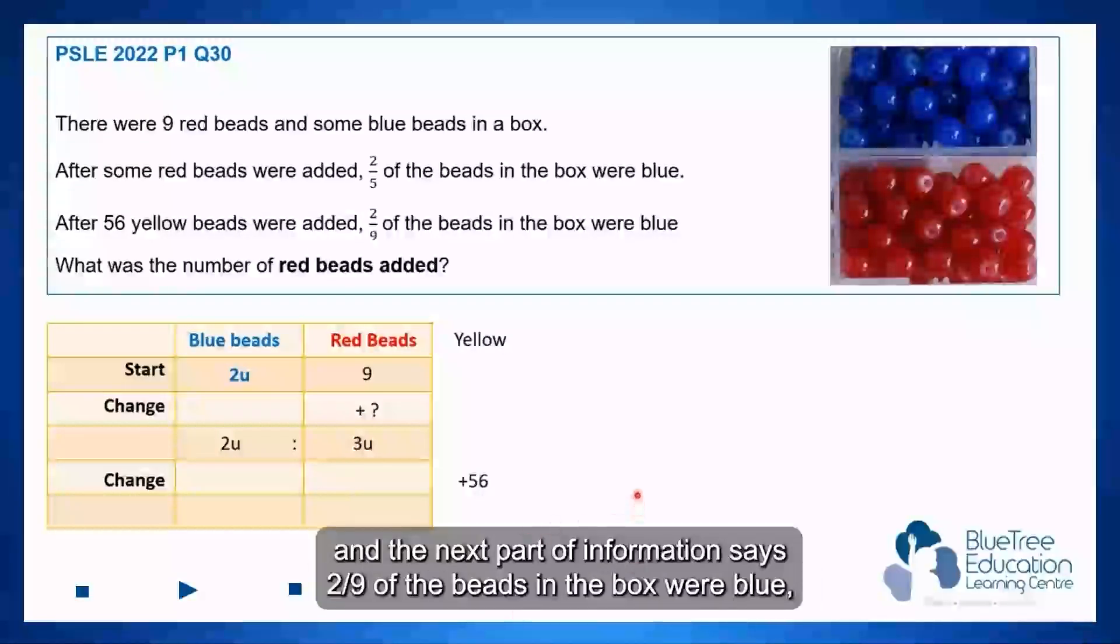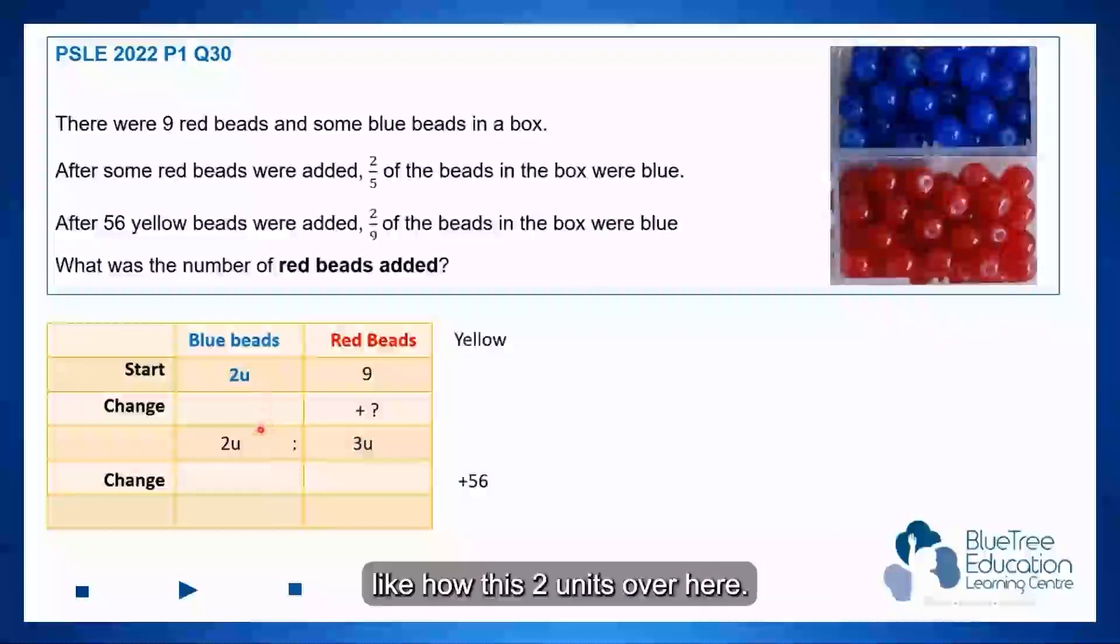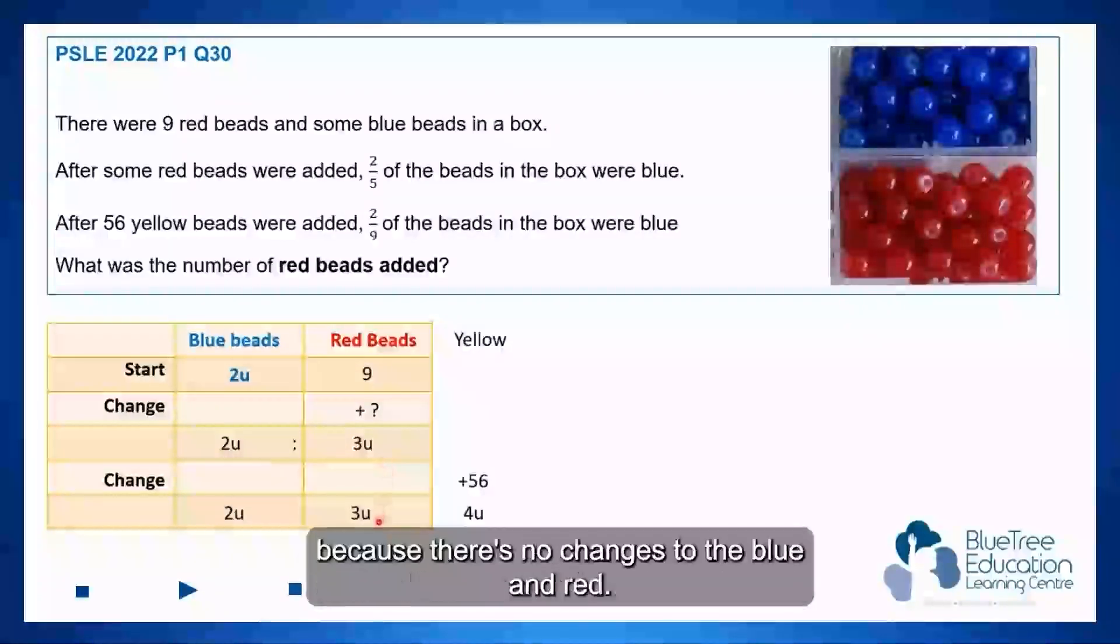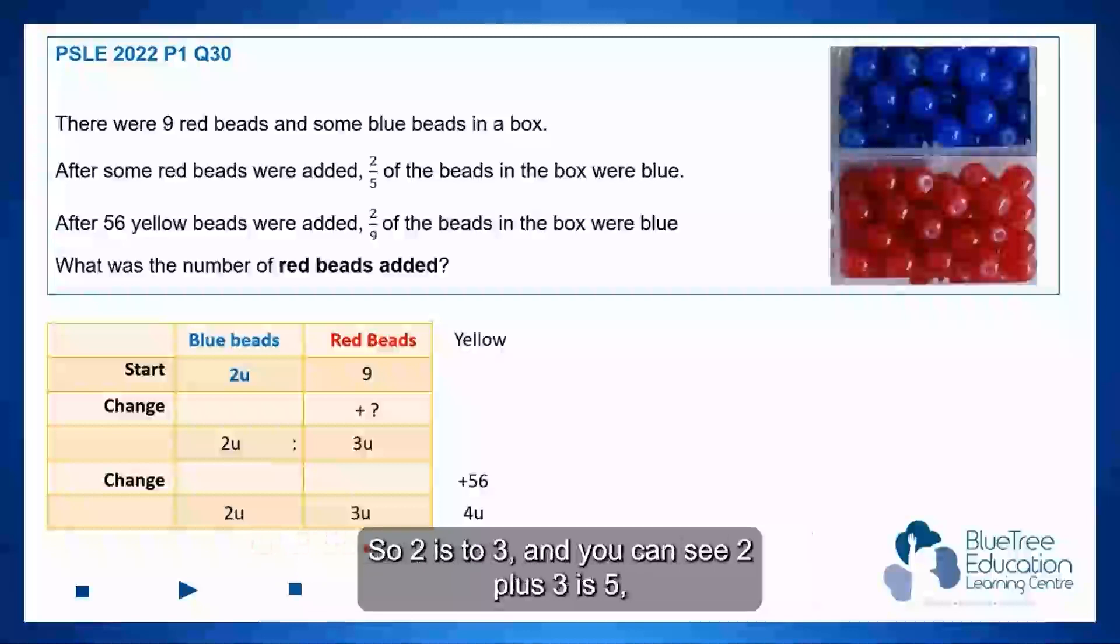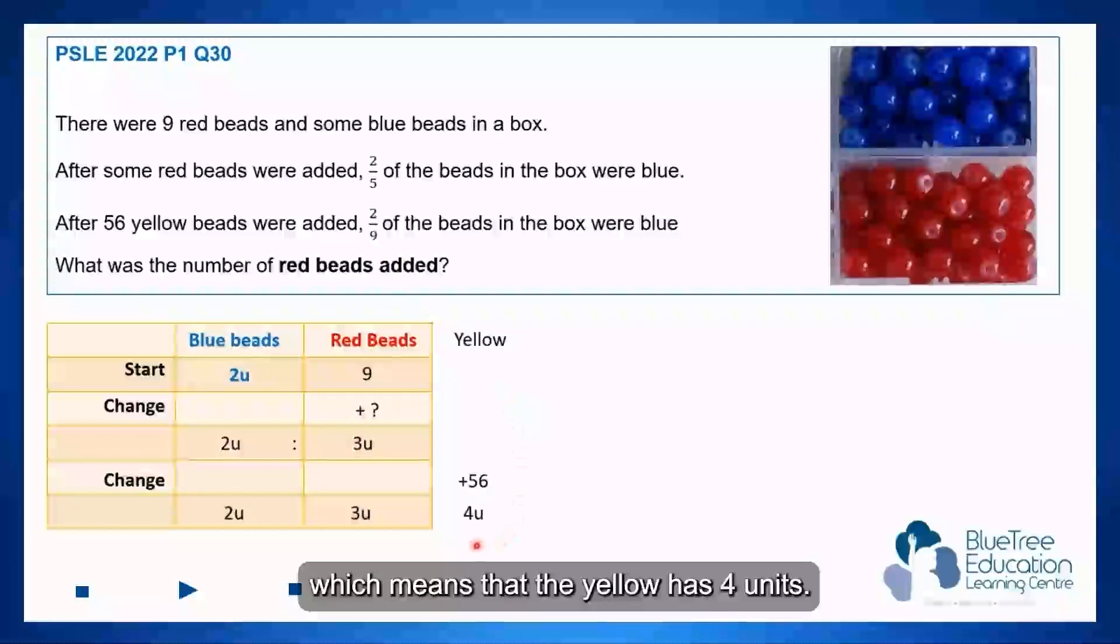And the next part of the information says two-ninths of the beads in the box were blue, which means that the two units for the blue will stay like this two units over here. And so I've allocated three units for the red because there's no changes to the blue and red, so it's two and three. You can see two plus three is five, and the denominator here is nine units now, which means that the yellow has four units.